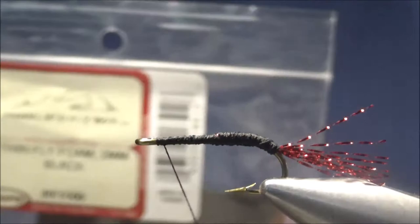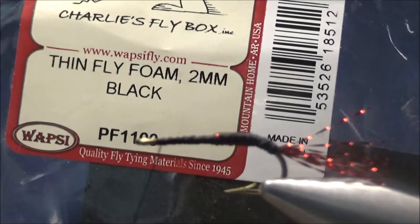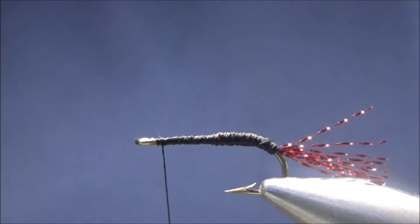For the body of the fly, I'm going to be using some foam. This is a thin fly foam, it's two millimeter. It's not exactly fun foam, it's a little different. If you use fun foam, you have to be very careful that the thread might cut it. I've cut off a six inch section of this foam and it's a quarter inch in width.